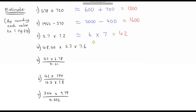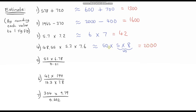48.55 rounds up to 50, multiplied by this which rounds down to 5, and then this rounds up to 8. So we've got 50 multiplied by 5 multiplied by 8. I'll do 5 times 8 first: that's 40. Now we've just got 50 multiplied by 40. 50 times 4 is 200, so 50 times 40 is 2,000.